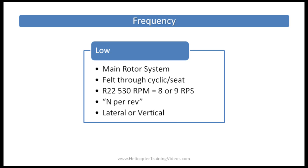A lateral main rotor vibration would be the feeling of a sideways rocking, and a vertical would be the feeling of an up and down bump. Mechanics try to adjust pitch links, hub weights, tip weights, and trim tabs to reduce these track and balance issues as they're known. I've known of a helicopter that had such bad low frequency vibrations that for a short time it was hard to read the flight instruments. It was fixed by a mechanic doing a track and balance.